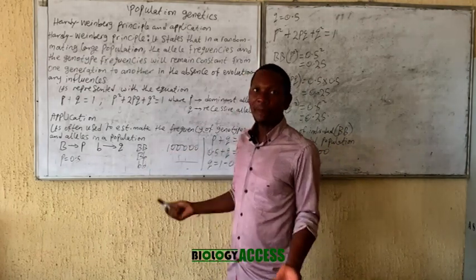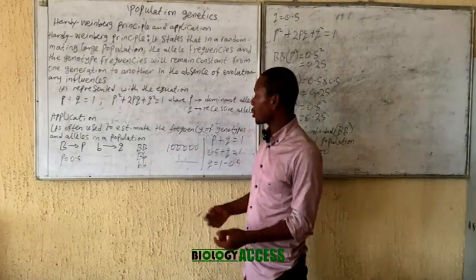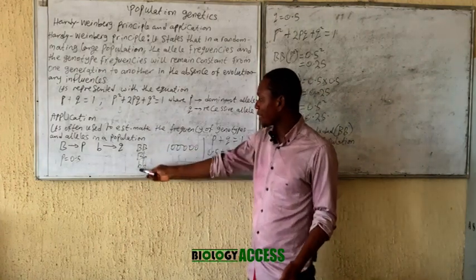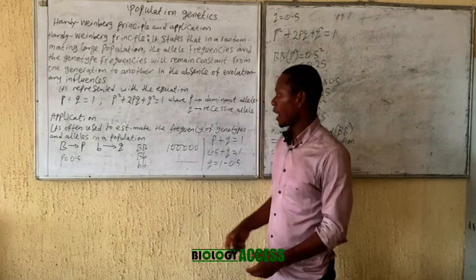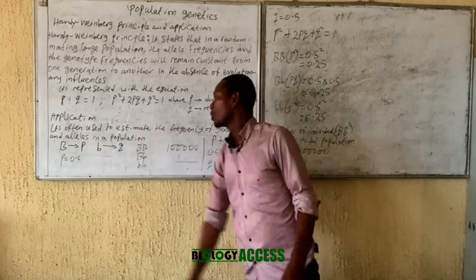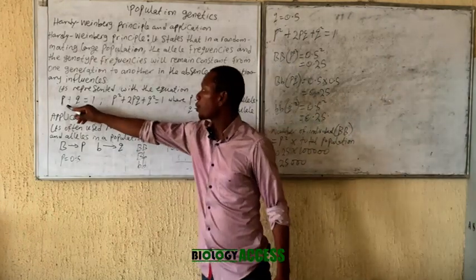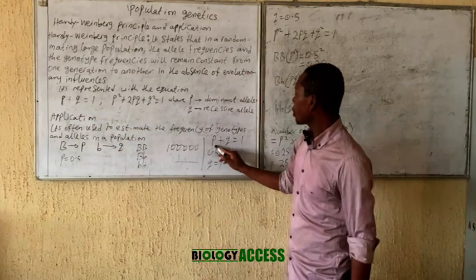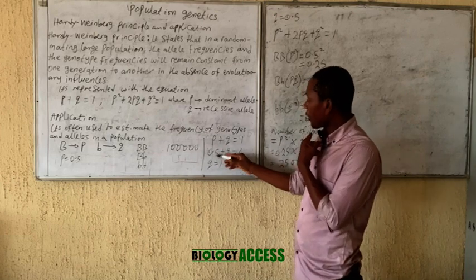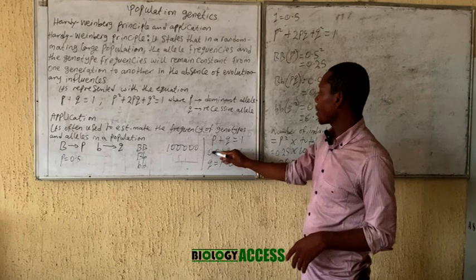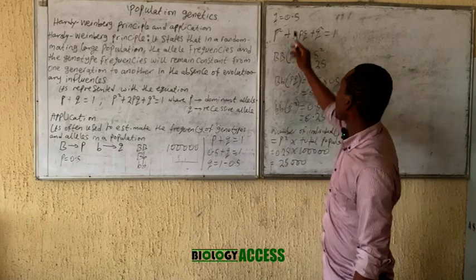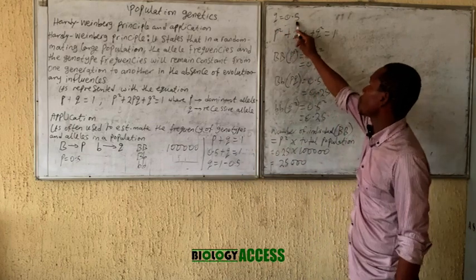For example, the genotype frequency — that is the homozygous dominant genotype frequency, the heterozygous dominant genotype frequency, and the genotype frequency for the recessive. To get Q, since you already have P, you use the equation: P plus Q equals 1. So, 0.5 plus Q equals 1. Taking 0.5 across, it becomes Q equals 1 minus 0.5, and our final answer is Q equals 0.5.